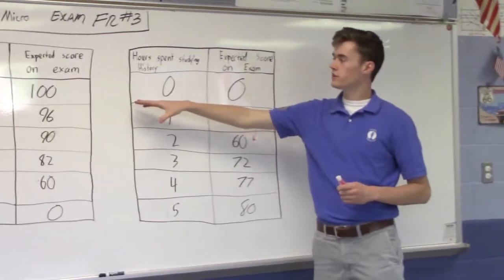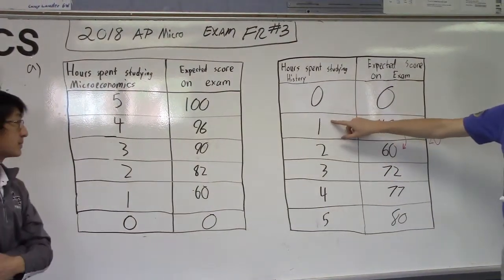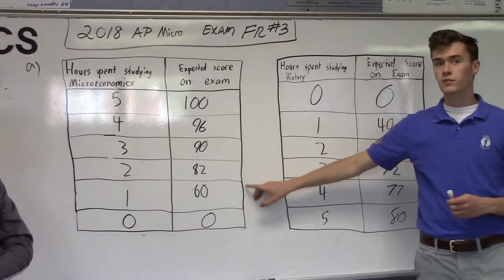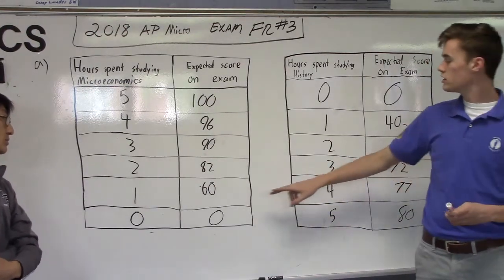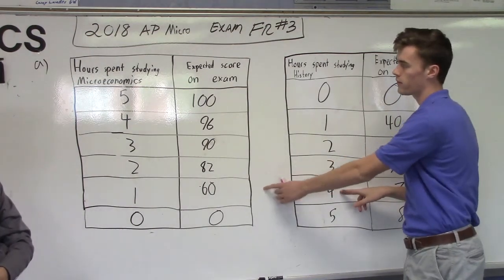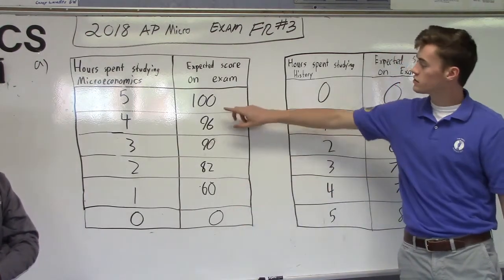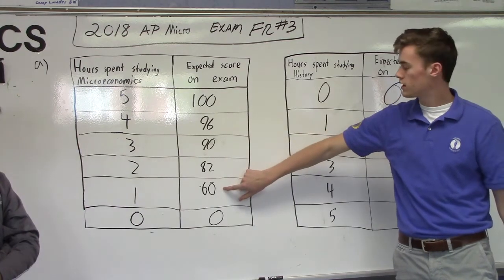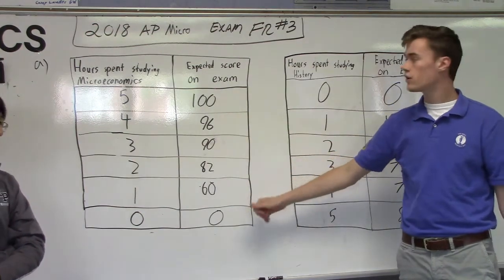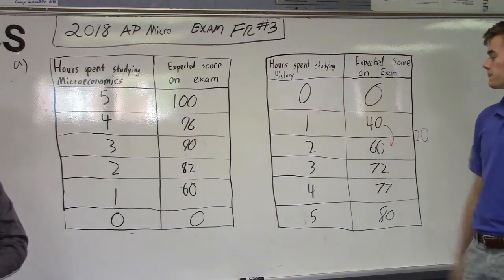Alright, so if you look, these tables are conveniently set up where if you add straight across, it'll equal five hours. So if you look as these increase, these numbers decrease at an even more rapid rate. So if, say, she goes, if she's studying four hours for history, and she gives up that one hour from microeconomics and goes to five hours, she loses a full 60, which is way more than the 12 she loses, or the 22 she loses here, or the eight she loses here. So you can clearly see that the opportunity cost is increasing as time allocated to studying history increases.